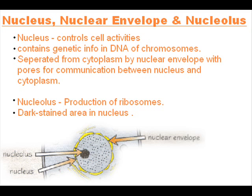The nuclear envelope contains many pores. The nucleus contains chromatin and often a structure called the nucleolus. Chromatin is made from proteins and DNA. DNA controls the cell's activities. The pores allow substances, for example RNA, to move between the nucleus and the cytoplasm. The nucleolus makes ribosomes.